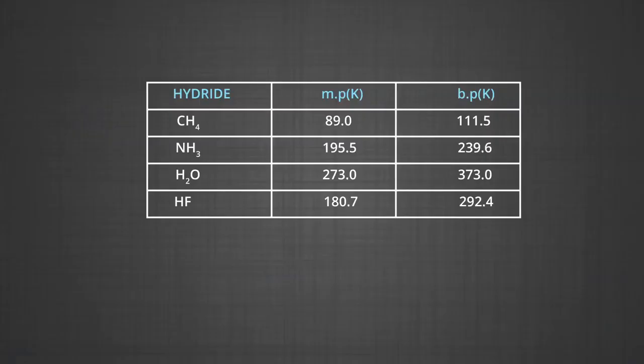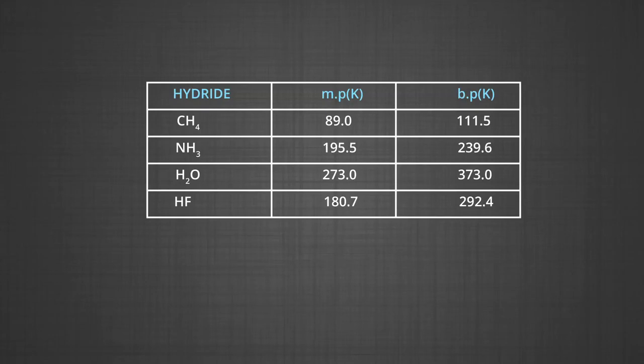The influence of hydrogen bonding on melting and boiling points can be understood by comparing the hydrides of group 14, 15, 16 and 17 elements. The melting points (in Kelvin) are: methane 89.0 K, ammonia 195.5 K, water 273.0 K and hydrogen fluoride 180.7 K. From this data, you can see that the melting point of water is very high due to the high electronegativity of oxygen and intermolecular hydrogen bonding.